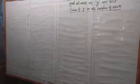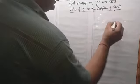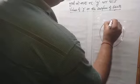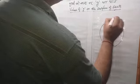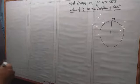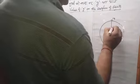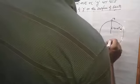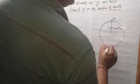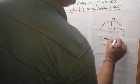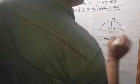We will consider the mass of Earth. The Earth has a center, and if there is a mass on the surface of the Earth, the radius of Earth is 6.4 × 10⁶ meters. The mass of Earth is 6 × 10²⁴ kilograms.